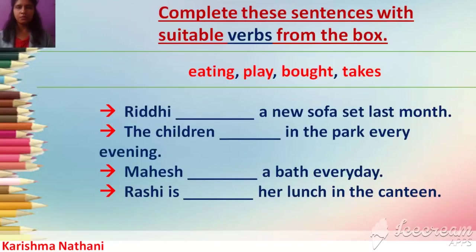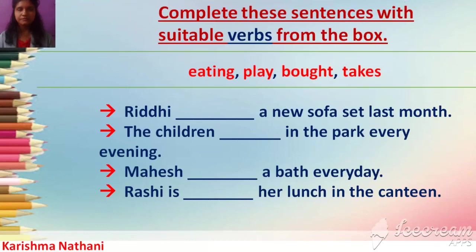Now let us understand this concept with your text exercise. Complete these sentences with suitable verbs from the box. You have to select the correct one and write it into the given blank. 'Riddhi ___ a new sofa set last month.' The answer is 'bought'. 'Riddhi bought a new sofa set last month.' It shows the past state of this action.